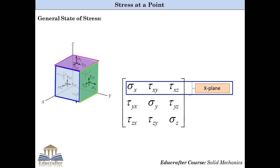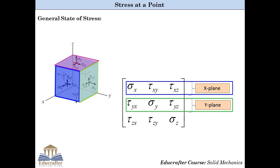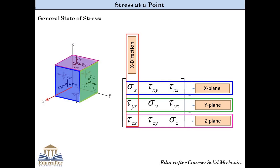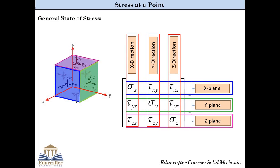The components in the first row — sigma X, tau Xy and tau Xz — are the components acting on the plane perpendicular to the X axis. The components in the second row are the components acting on the plane perpendicular to the Y axis, and the third row contains components acting on the Z plane. Looking at the columns, the first column contains components acting along the X direction, the second column contains components along the Y direction, and the third column contains components along the Z direction. All components in the main diagonal of the stress tensor represent normal stress, while the other components represent shear stresses.